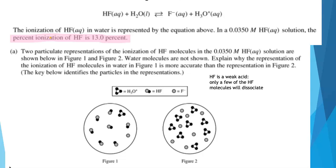Hopefully you memorized your list of strong acids, but HF is a weak acid. And that means only a few of the HF molecules are going to dissociate. In many weak acid solutions, it's less than 5%. In this particular example, it's 13%. But it's still, you know, 13 out of every 100. And these two figures are meant to be the same molarity. So let's look at figure 1, what's going on in there, what's represented on the particle level.